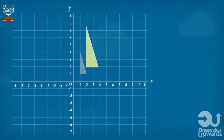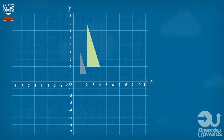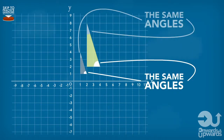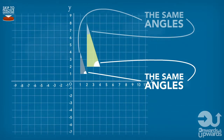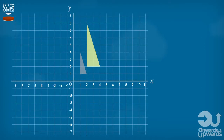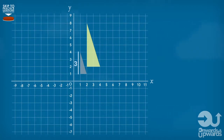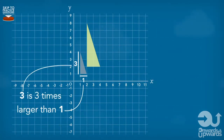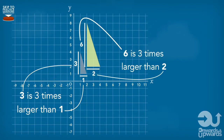Bear with me. In enlargement, the size of the shape changes, but we always keep all the angles and length ratios the same. Basically, what that means is that if we enlarge the shape, the corresponding angles are the same. And although the lengths have changed, how big they are in relation to each other basically remains the same. So for example, this side is three times bigger than this side, and with the same sides of the enlarged shape, this side is still three times bigger than this side.